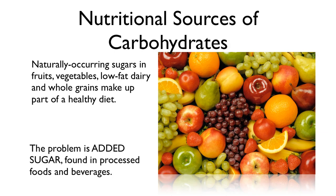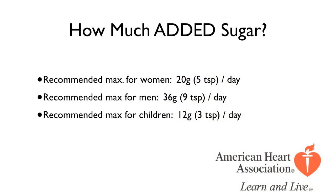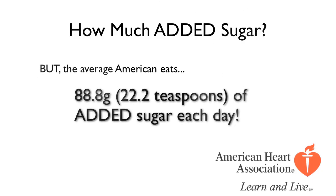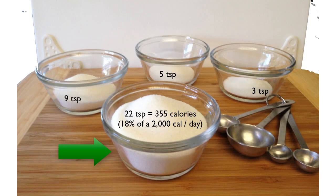The nutritional concern is added sugar that we find in processed foods and beverages. The American Heart Association recommends certain maxima for men, women, and children — this is added sugar, not the sugar found in your normal healthy diet when you eat fruits, vegetables, and grains. But the average American eats — are you ready for this — 22 teaspoons of added sugar every day. If you want to know what that looks like — oh my goodness — that is an insane amount of sugar.